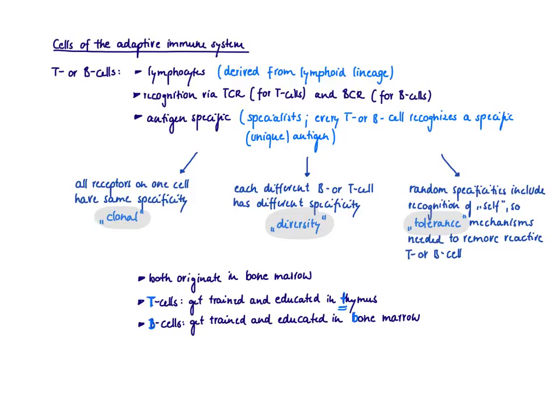Also, the pattern recognition receptors have evolved in a way that they specifically recognize pathogens, and they don't recognize self molecules. So there is no need to get rid of any self-reactive cells. So we also do not have tolerance mechanisms.